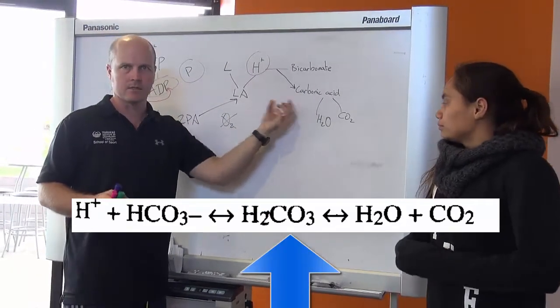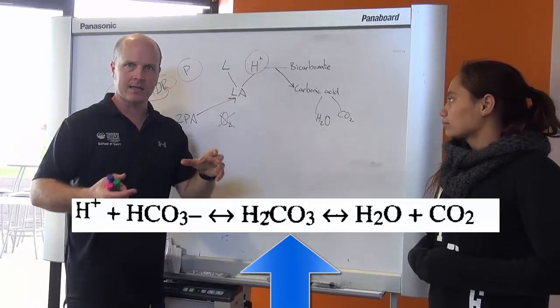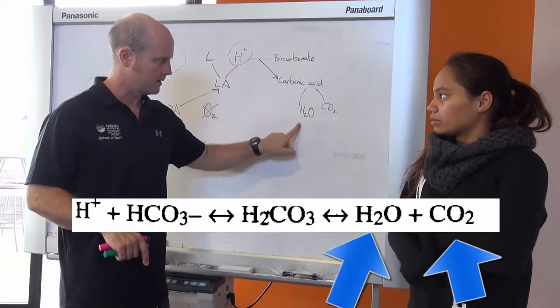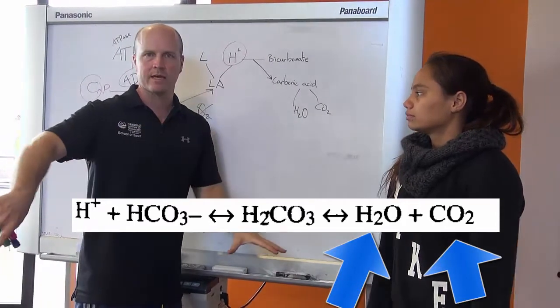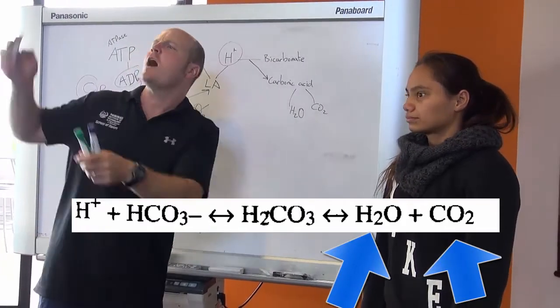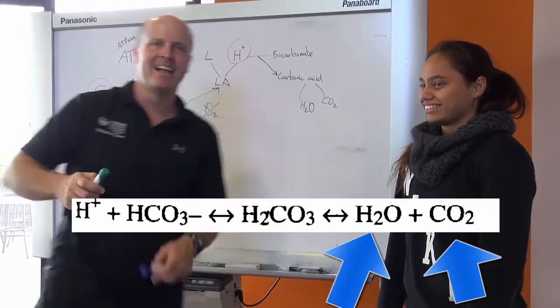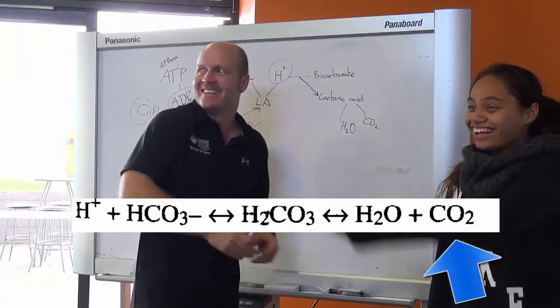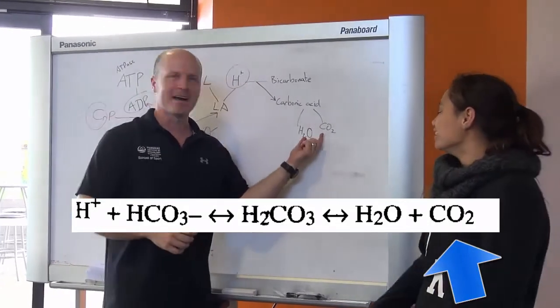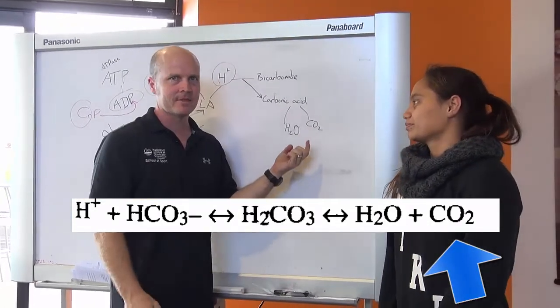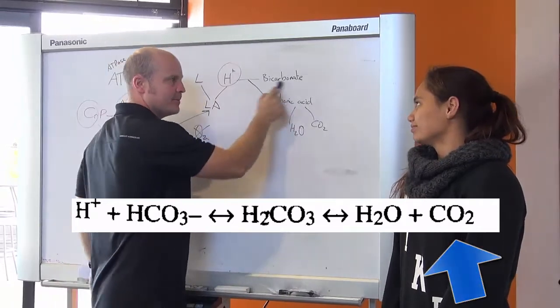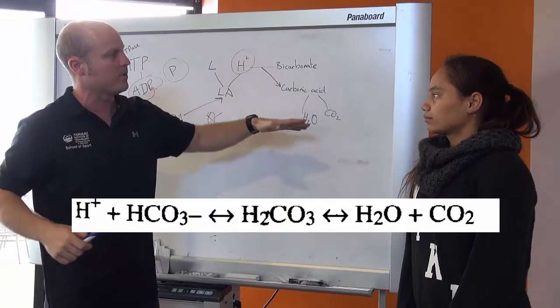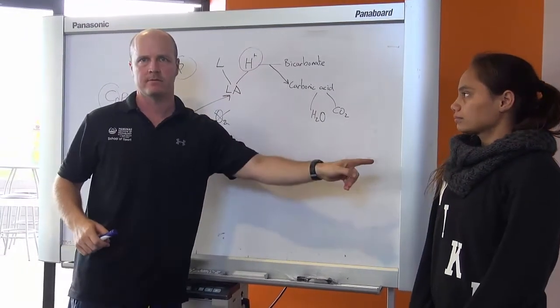And carbonic acid is a weak acid, and it can break apart and turn into carbon dioxide and water. And our water, we can just store back in the cell, and our carbon dioxide, we can breathe out. So while we've got enough bicarbonate, we can tolerate our hydrogen because we can buffer them off and then get rid of them via the system.